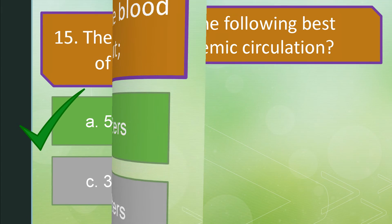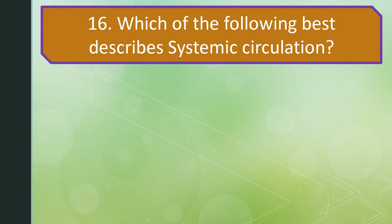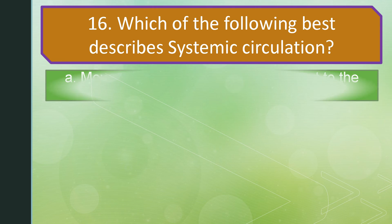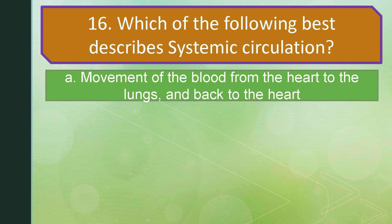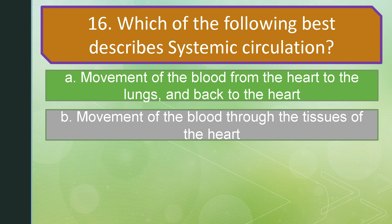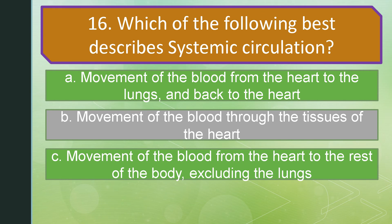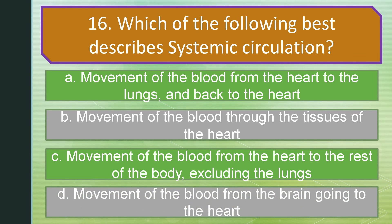Question number 16. Which of the following best describes systemic circulation? Letter A: Movement of blood from the heart to the lungs and back to the heart. Letter B: Movement of blood through the tissues of the heart. Letter C: Movement of blood from the heart to the rest of the body excluding the lungs. Or letter D: Movement of blood from the brain going to the heart. The correct answer is letter C: Movement of blood from the heart to the rest of the body excluding the lungs.